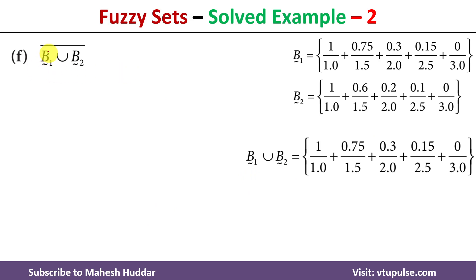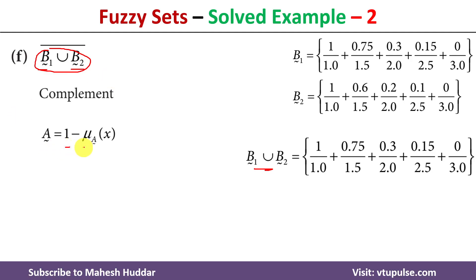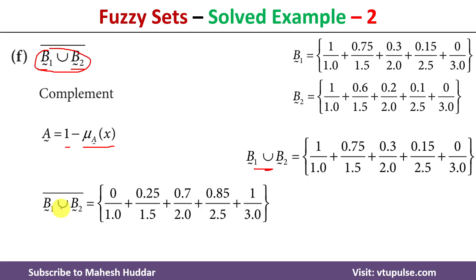Finally, we need to calculate the complement of the union of fuzzy sets B1 and B2. We first use the union already calculated. Then we take the complement, which is 1 minus the degree of membership for every element. For element 1, the degree of membership in the union is 1, so 1 minus 1 equals 0. For element 1.5, the degree of membership in the union is 0.75, so 1 minus 0.75 equals 0.25. We calculate similarly for the remaining elements.